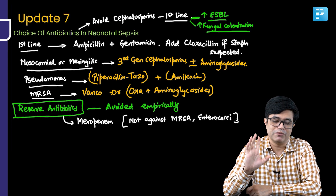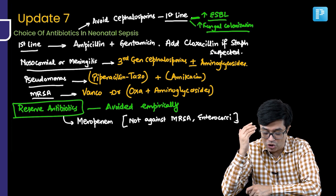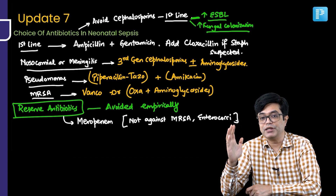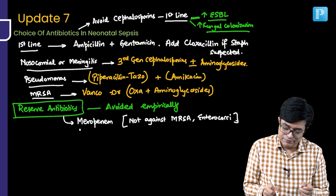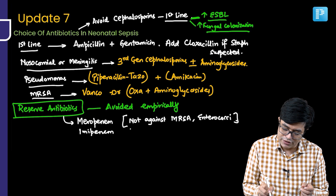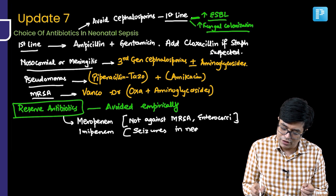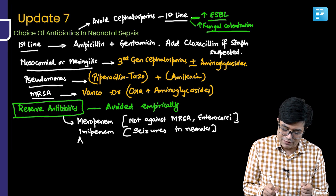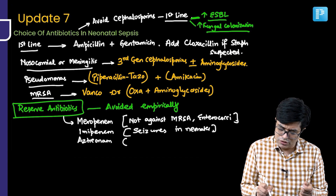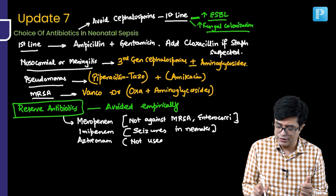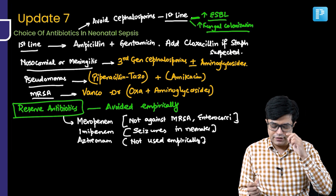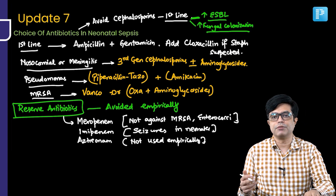For exam purposes, remember the ideal approach. Meropenem is not effective against MRSA and enterococci, and is not given empirically. Imipenem is a very good drug but is avoided in newborns because it can cause seizures; it is used only if no other option is left. Aztreonam is also a reserve drug with good gram-negative coverage, including certain resistant gram-negative pathogens, but is not used empirically. Linezolid is also a reserve drug.